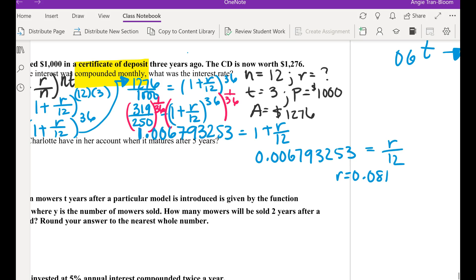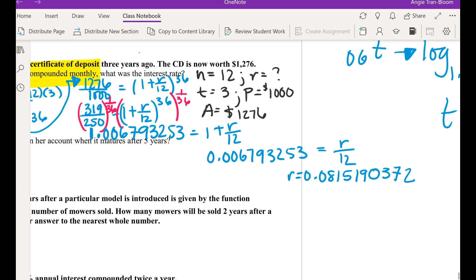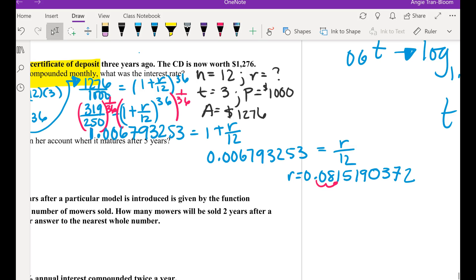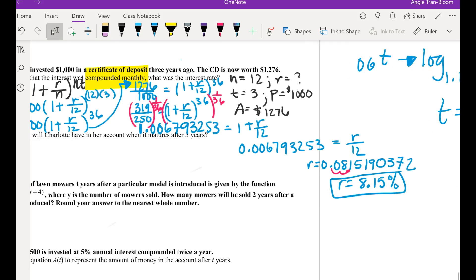Remember, I don't want you guys to round until the very end. What do you think you'd do next? Subtract the 1. So from here, I'm going to subtract the 1, so I have 0.006793253 equals to R divided by 12. What's the next move? Multiply by 12. Heidi, give me R of all decimals. 0.08115190370. Because it is looking for the rate we have to write as percentage, so move to the right twice. So your rate of her CD is 8.15%.